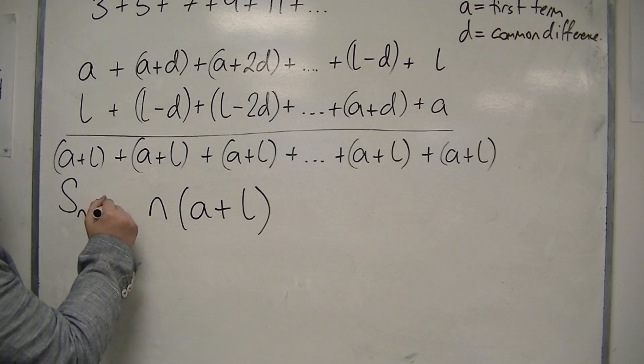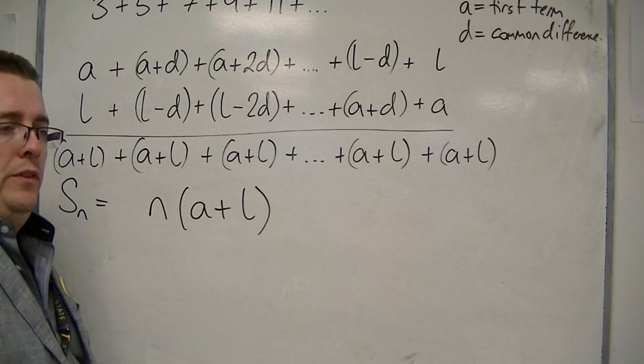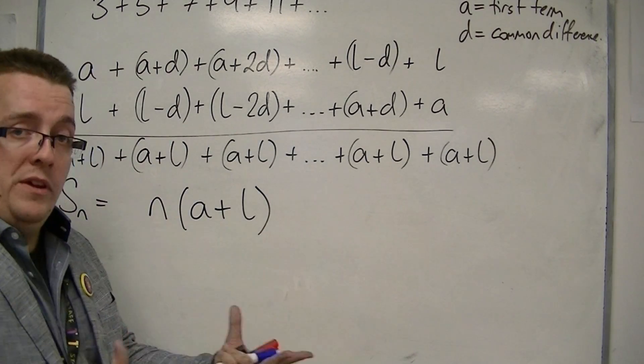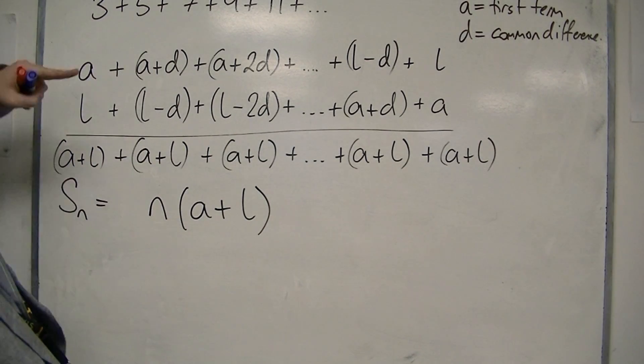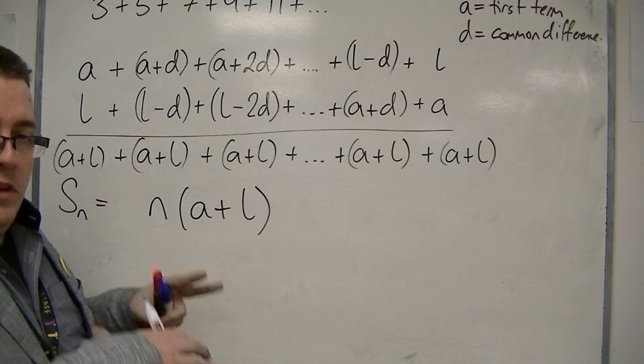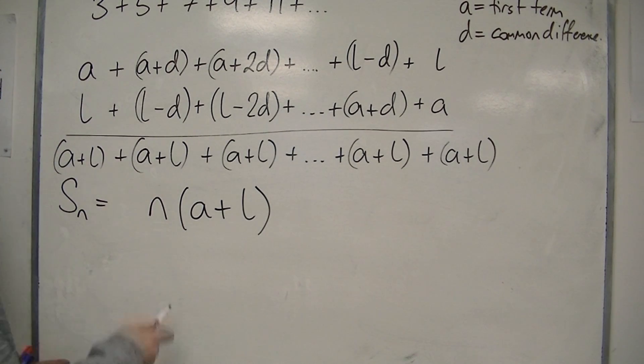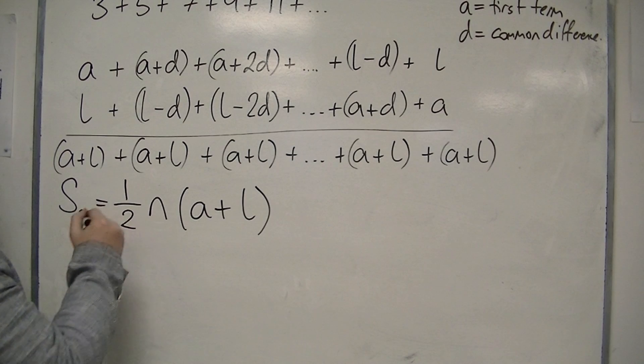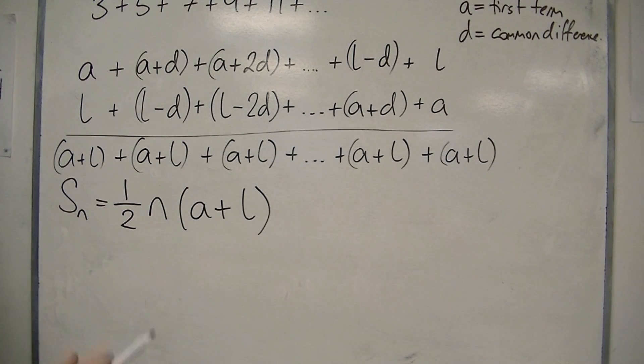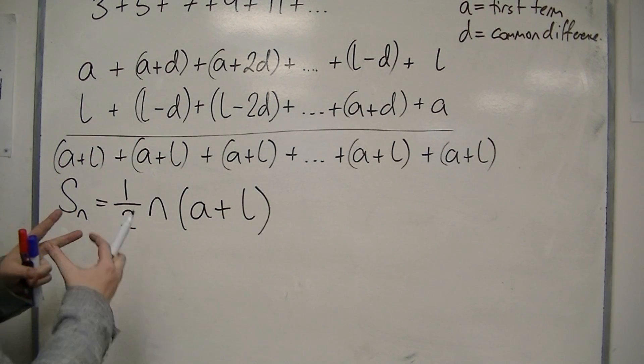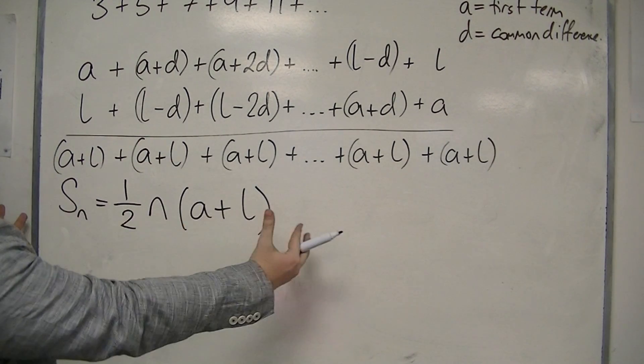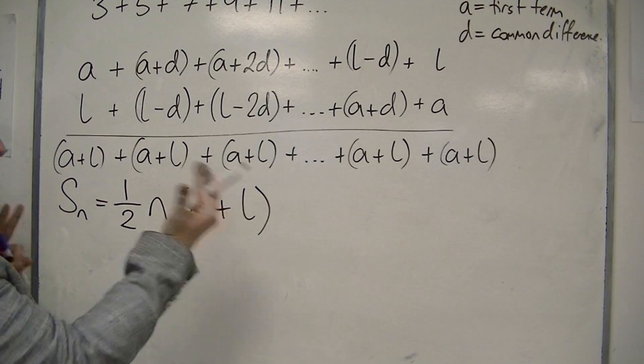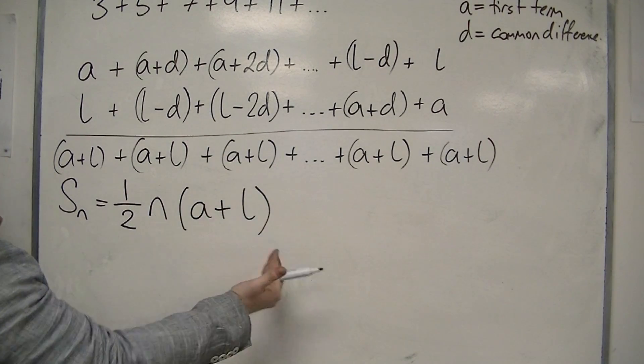However, because I've actually added the sequence to itself, I've doubled it, because I've got one there and one there. So I've combined them and made two. So actually, I only want half of all these. And that is a way of adding up the whole series. This is a formula for an arithmetic series. The sum up to the first N terms.